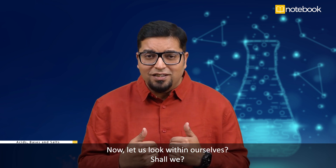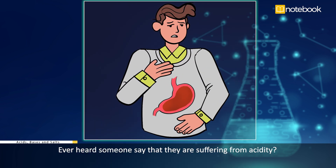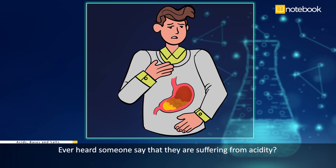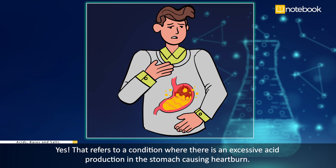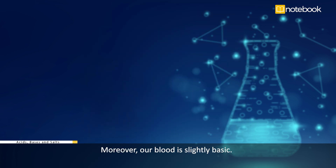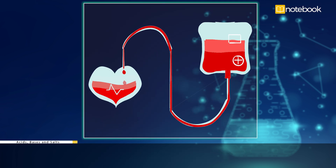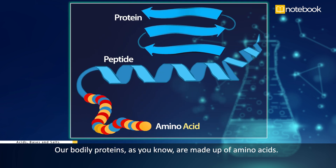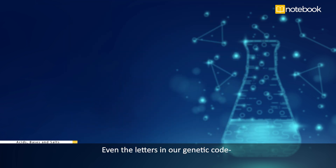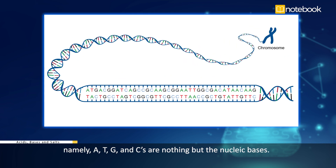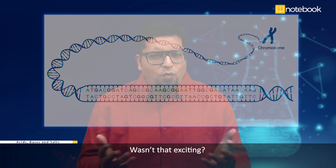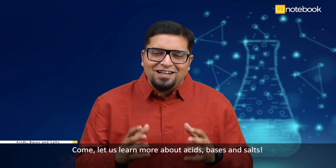Now let us look within ourselves. Ever heard someone say that they are suffering from acidity? That refers to a condition where there is excessive acid production in the stomach, causing heartburn. Moreover, our blood is slightly basic. Our bodily proteins are made up of amino acids. Even the letters in our genetic code — A, T, G, and C — are nothing but nucleic bases.